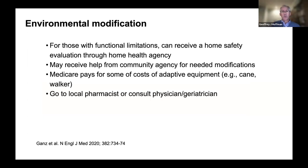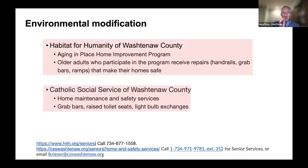Home modification has also been shown in systematic reviews and clinical trials to reduce falls. Those with limitations getting around on their own can get a home safety evaluation through a home health agency via Medicare. Habitat for Humanity of Washtenaw County has an Aging in Place Home Improvement Program, and for some adults, can help install handrails, grab bars, and ramps. Catholic Social Services of Washtenaw County also has programs including light bulb exchanges and installing raised toilet seats.